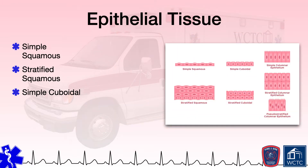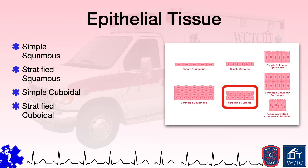Stratified cuboidal epithelial tissue is comprised of cube-shaped cells like simple cuboidal tissue, but these cells are in two layers, not one, which provides protection for underlying structures by serving as a lining for larger mammary gland ducts, sweat gland ducts, and salivary glands.